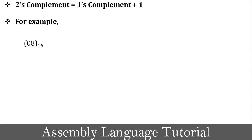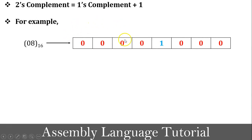For example, the value 08 in hexadecimal format. I am explaining the example in hexadecimal format because whenever we implement a 2's complement program in GNUSim 8085, the registers store hexadecimal values. Now, 08 converted into binary is 00001000 — four zeros, then 1, then three zeros.